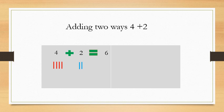Now let's do in vertical way — that is, one number below the other. 4 plus 2. First, draw 4 lines: 1, 2, 3, 4. Then draw 2 lines: 1, 2. Count the total number of lines: 1, 2, 3, 4, 5, 6. So 4 plus 2 equals 6. When you add two numbers vertically or horizontally, you will get the same answer. The sum will be the same. Here, 4 plus 2 equals 6.